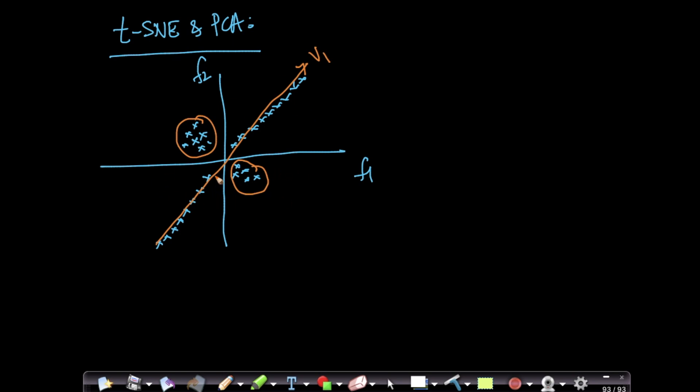What happens when I try to project all the data to V1? These two sets of points will now get projected onto the same area, and we lose the information that they're well-separated clusters of points or groups of points. In a nutshell, PCA is trying to preserve the global shape of data.